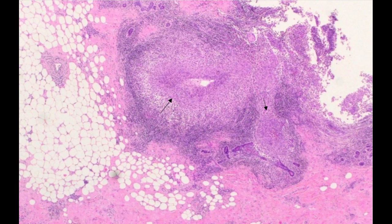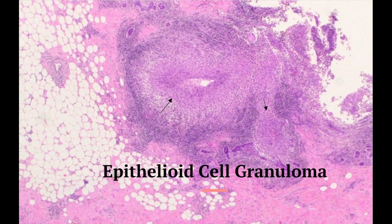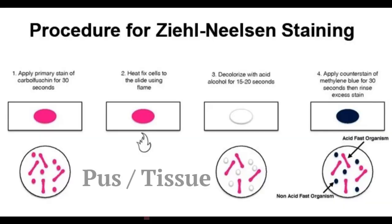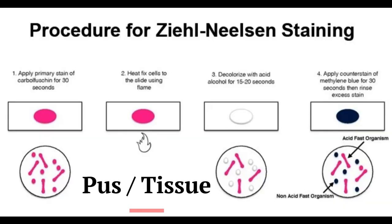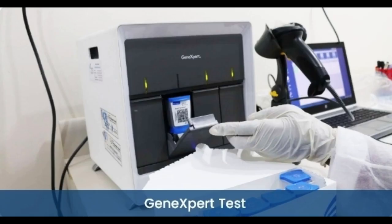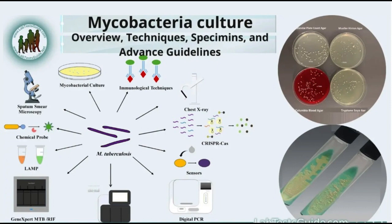Tubercular mastitis results in epithelioid cell granuloma with caseating necrosis. Acid fast bacilli can be seen occasionally in the pus aspirate from caseation necrosis. Any pus or tissue should be sent for ZN staining, GeneXpert MTB testing, and mycobacterial culture.